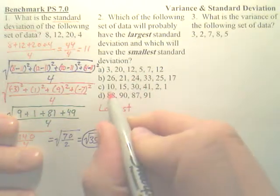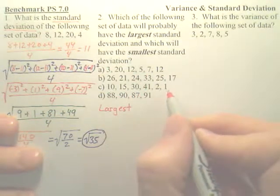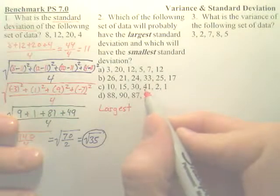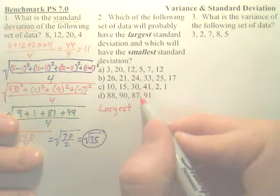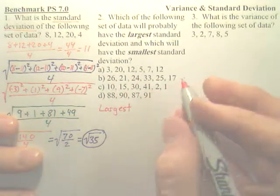And if you look at all these, I believe C has the numbers that are farthest apart. You have a 1 all the way to the 41. You have a 30. They're kind of all jumped all over the place. When you compare all four, this data is most spread out.